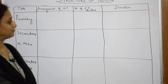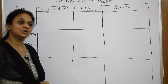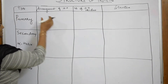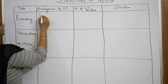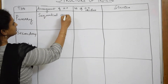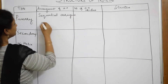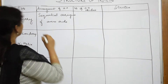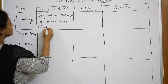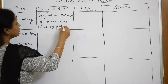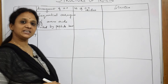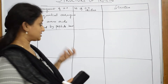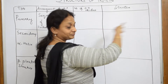In the primary structure of proteins, the arrangement of amino acids is a sequential arrangement — one after the other. The amino acids are linked to each other by peptide bonds. There are 20 amino acids which are present, and in the primary structure they are arranged in a specific linear sequence.